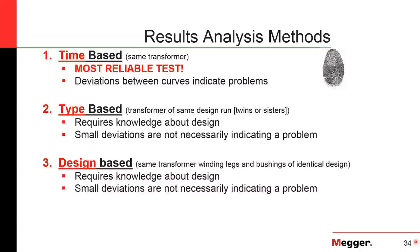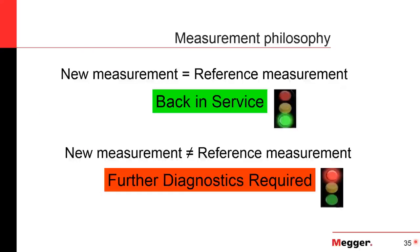Interpreting results is pretty simple in the basics. You take your new measurement and compare it to your reference. If they overlay and line up, there are no mechanical or physical changes inside that transformer — put it back in service. If your new measurement doesn't line up with your reference fingerprint, you know something physically or mechanically changed inside that transformer and further diagnostics are required.